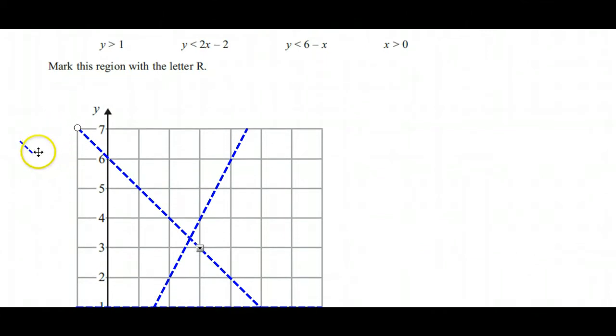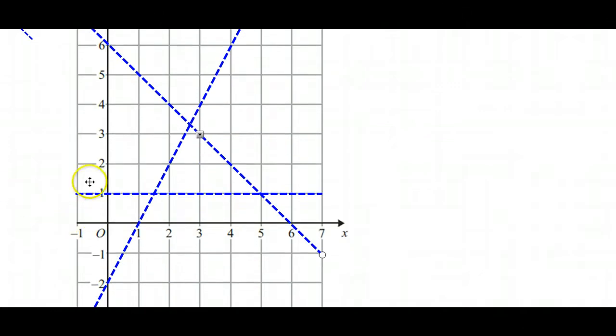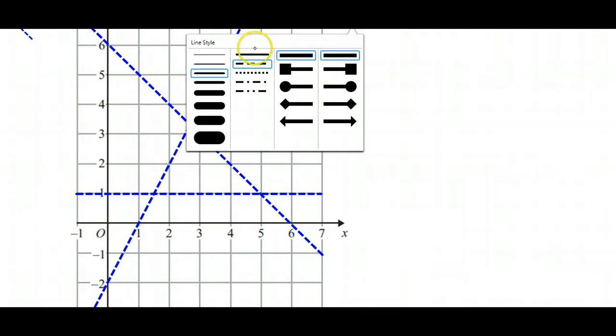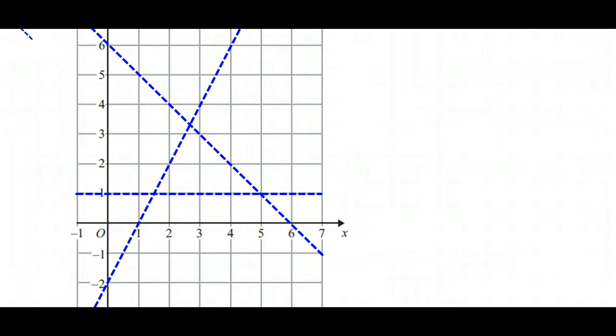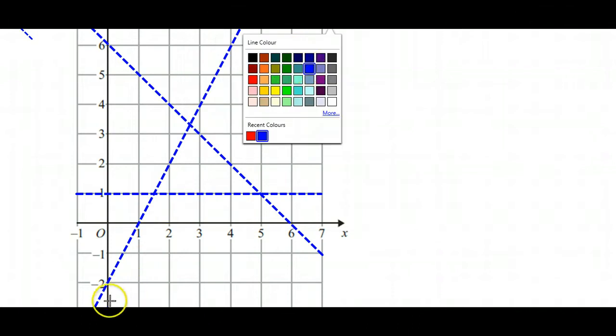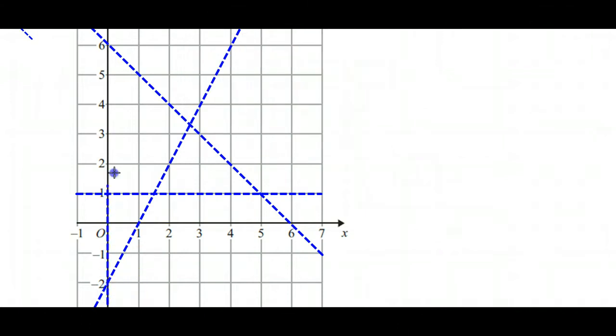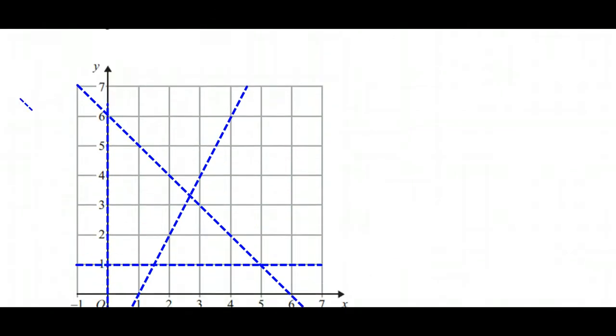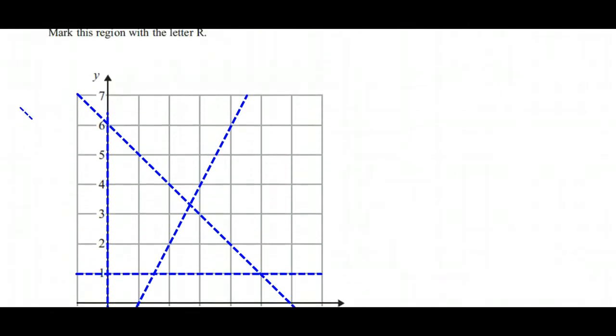And then finally we've got x > 0. Well, where is x zero? x is zero everywhere along the y-axis. So the first thing we'll need to do is put in the line where x = 0, which would be this one.